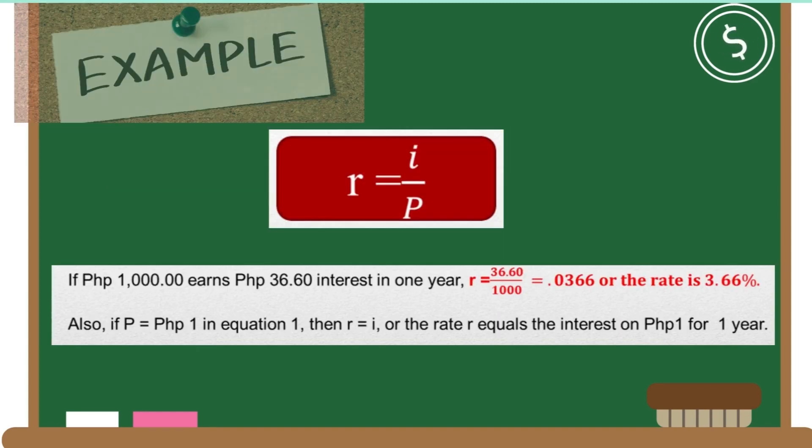For example, using the formula r = I/P, if 1000 pesos earns 36.60 interest in one year, we have to solve using the formula r = I/P. So I is 36.60 and P is 1000, so it equals 0.0366 or the rate is 3.66%.